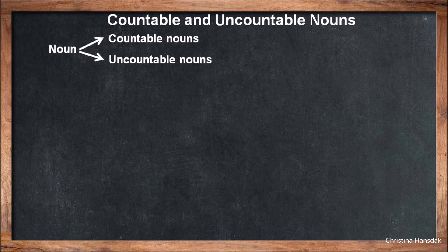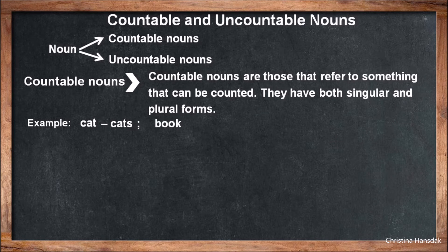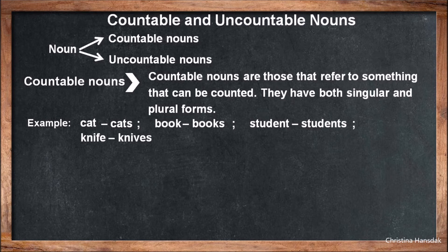Countable nouns are those that refer to something that can be counted. They have both singular and plural forms. Examples: cat/cats, book/books, student/students, knife/knives, bench/benches, etc.